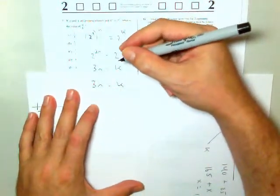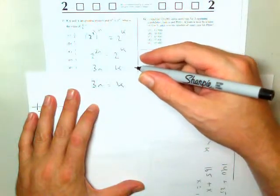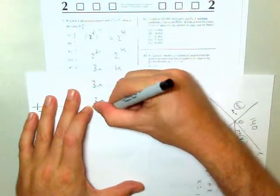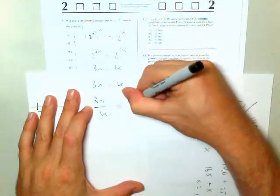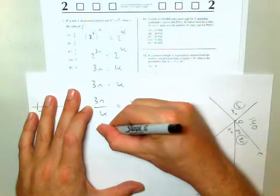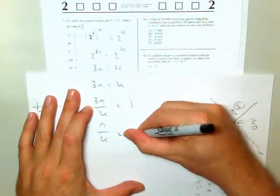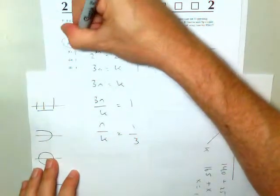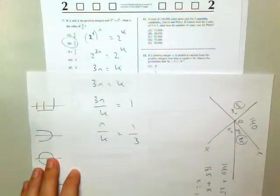Well, I'm going to divide both sides by k. 3n over k equals 1. Now I'm going to divide both sides by 3. I'm going to get n over k is 1 third, which should be B. Let's check it out. Okay, good.